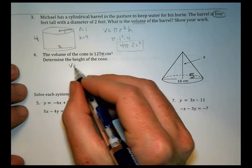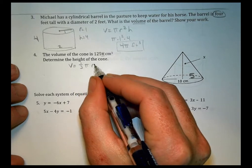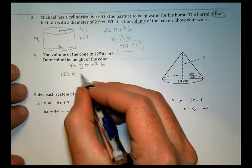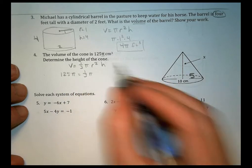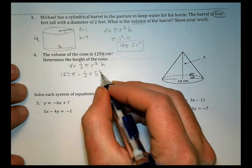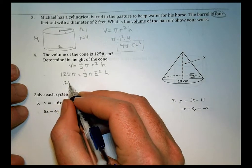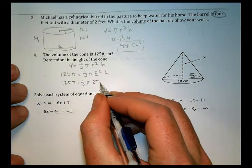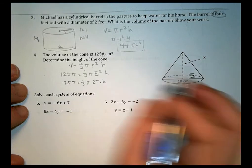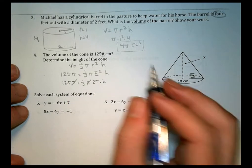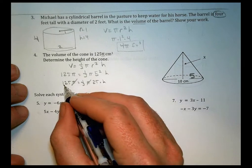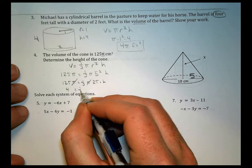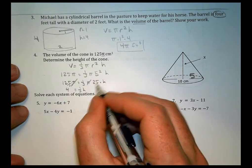Coming back to our formula, volume equals one-third pi r squared h. The volume was 125 pi. That equals one-third pi times five squared times h. The way we're writing it would be 125 pi equals one-third pi 25 times h. I can start canceling some things out. Pi divided by pi is no pi.